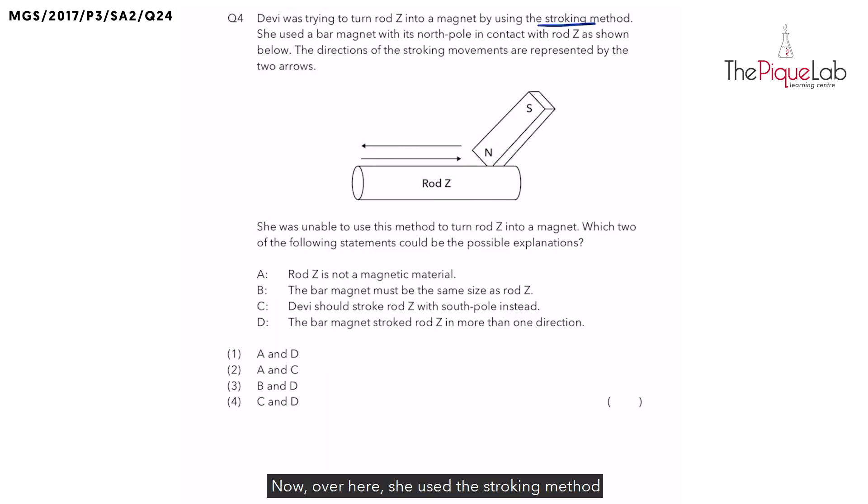Now, over here, she used the stroking method to try and make rod Z into a magnet. However, she was unable to use this method to turn rod Z into a magnet. So which two of the following statements could be possible explanations? Let's look at the options now.